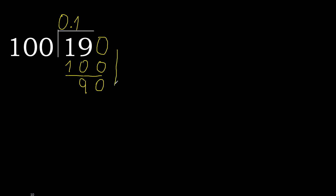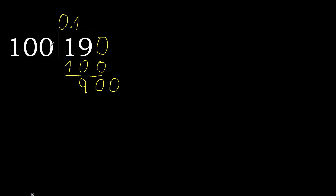Next. There is no number, therefore complete. Always complete with 0. Point is here: 0 point. 900. 100 multiplied by 9 is 900. Subtract: 0. 0, therefore finish.